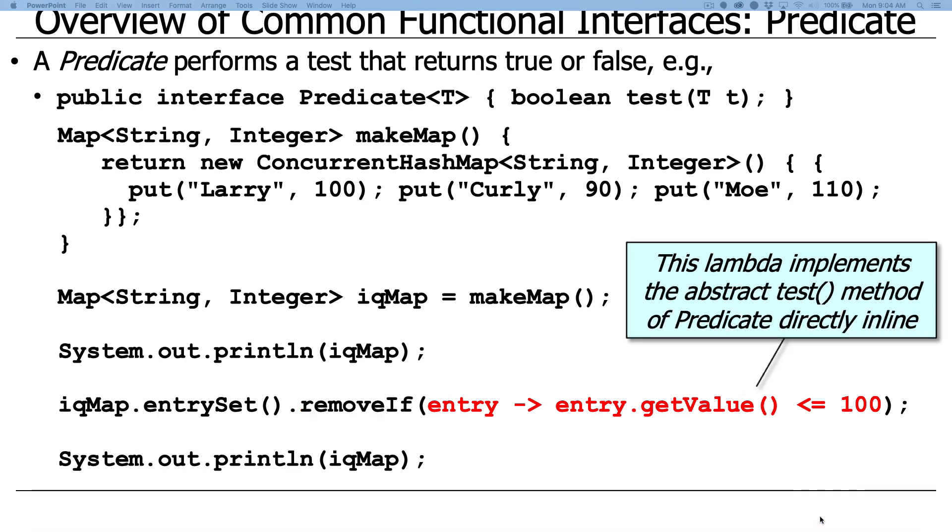So to try to make this a little bit more clear, I'll kind of walk through this step by step. So this lambda you see here implements the abstract test method shown up here, and that test method, of course, is defined in the predicate interface, and it implements it directly in line.